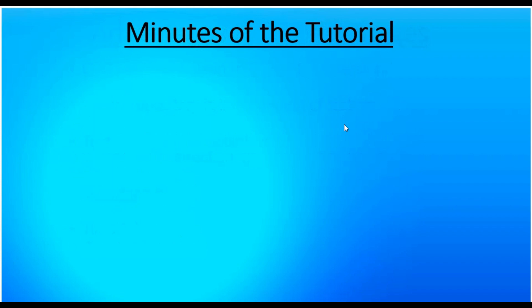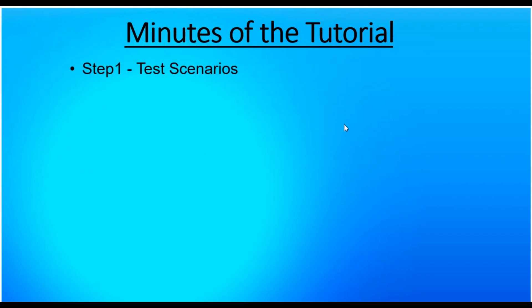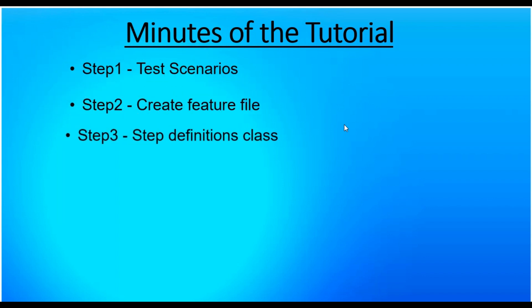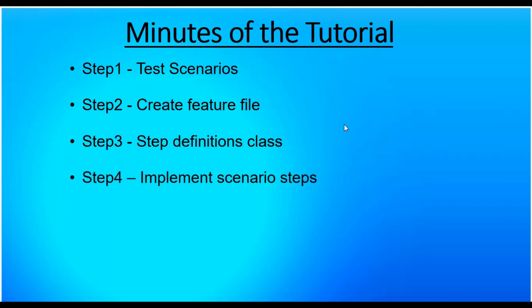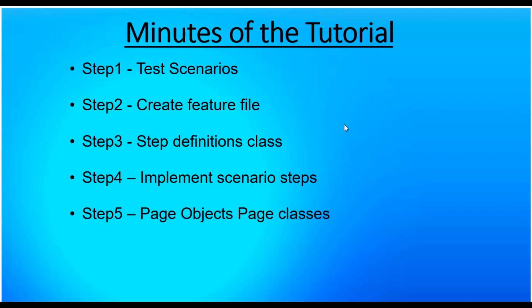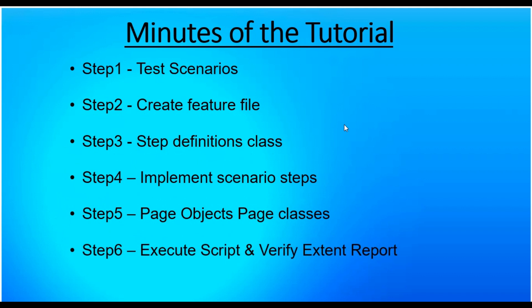So let's discuss the agenda of this tutorial — what we are going to do. Step one: we'll discuss the test scenario to automate using Page Object Model. Step two: we'll create the feature file. Step three: create the step definition class. Step four: implement the scenario steps in the step definition class. Step five: create the page classes. Finally, we'll execute the feature file and verify the extent report.